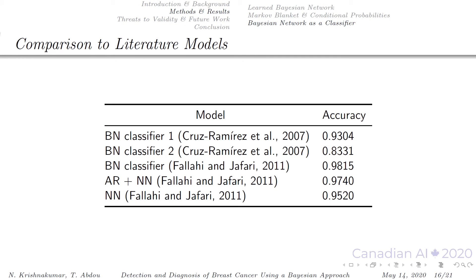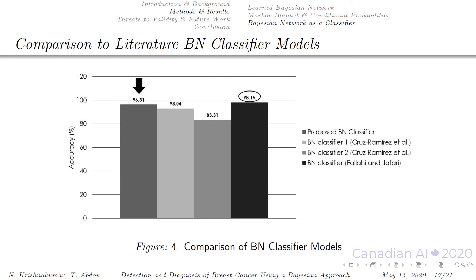On this slide, the table continues to compare our model to other literature BN classifiers for breast cancer. To visually illustrate these accuracies, here is a bar chart showing our model's accuracy alongside the literature BN classifier models. Our model outperforms these models in terms of accuracy except for Palahi and Jafari's model that has an accuracy of 98.15%. This could have resulted from using the feature selection algorithm Relief and synthetic minority oversampling technique.